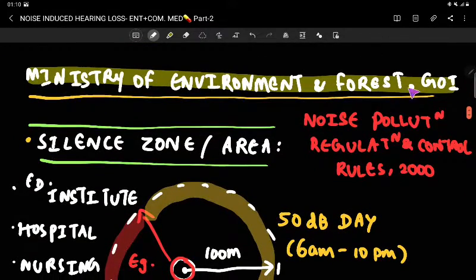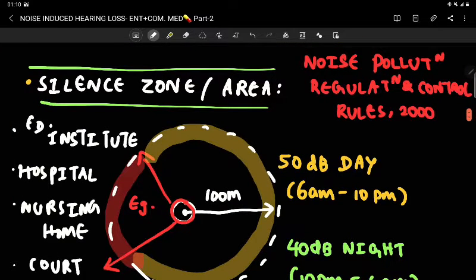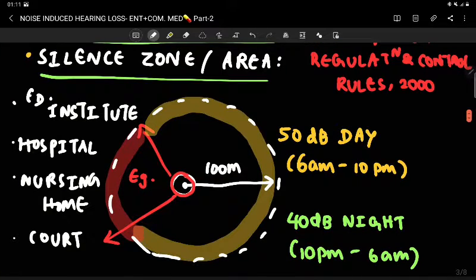The Ministry of Environment and Forest speaks about noise permissible limits. We are now going to speak about the silence zone or area, which is given by the Noise Pollution Regulation and Control Rules 2000. Basically, it says a silent zone is a hundred meter area in and around educational institutes, hospitals, nursing homes, or courts.